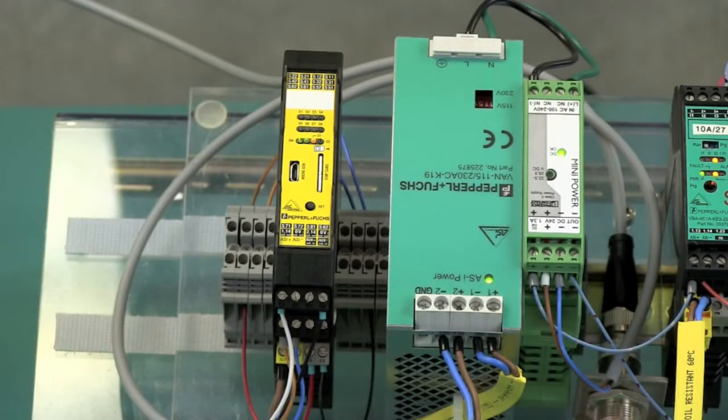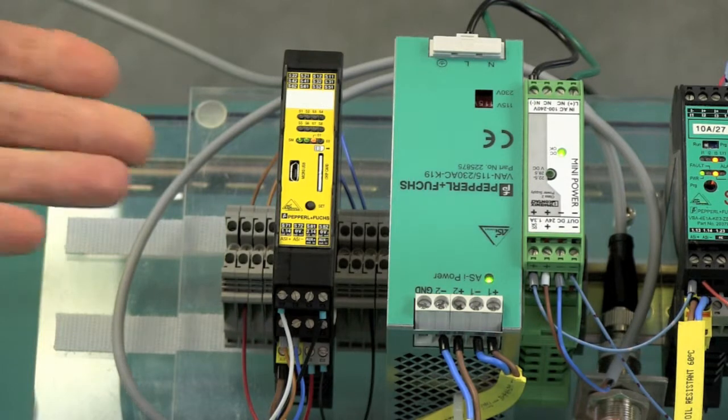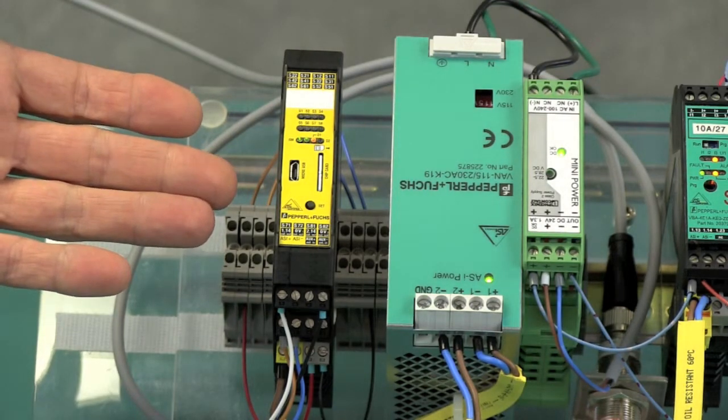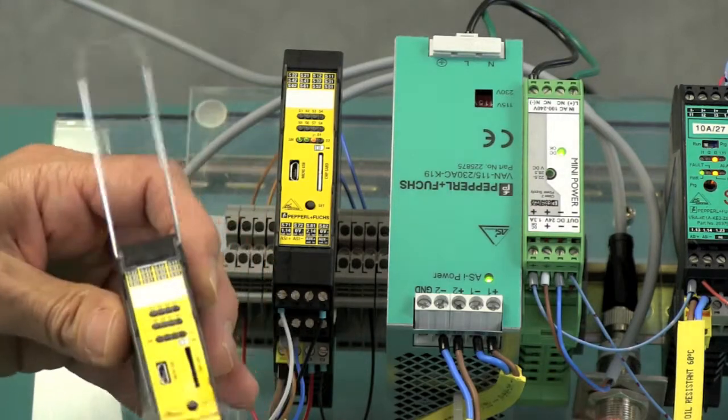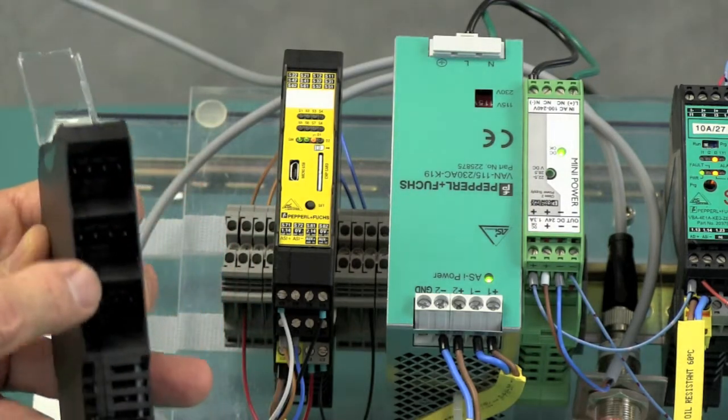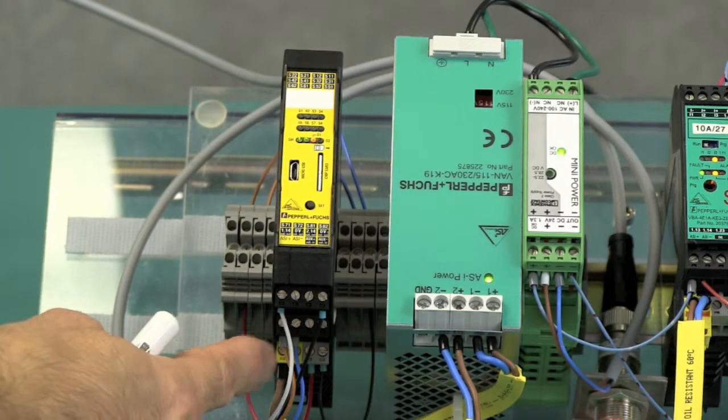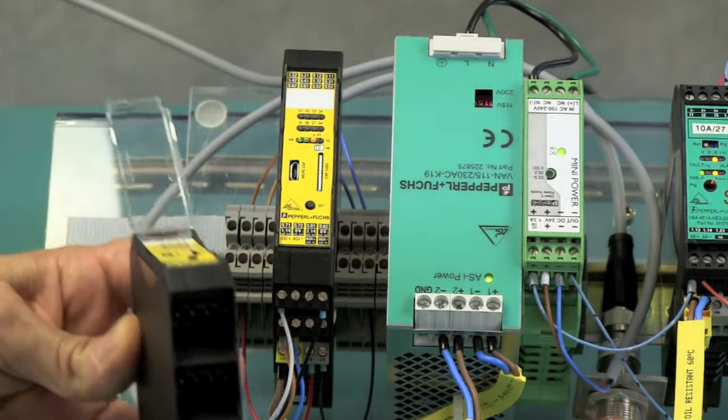For this demonstration we're going to assume that this KE4 Safety Controller is faulty and needs to be replaced by this unit. I've already removed its memory card and the terminals that I will have to move over from the old to the new unit.